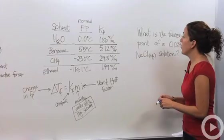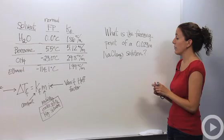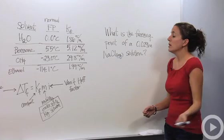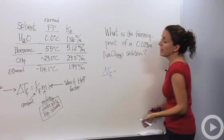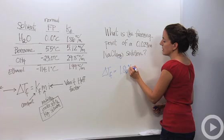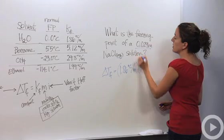What is the freezing point of a 0.029 molal NaCl aqueous solution? We know it's aqueous, and the aqueous tells us that our solvent is water. Our delta T, our change in temperature of the freezing point, is going to equal the constant of water, which is 1.86 degrees Celsius for every molal. The molal solution is 0.029.